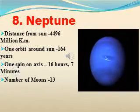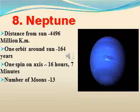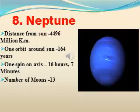Neptune is the last planet in our Solar System. Its distance from the Sun is 4,496 million km. One orbit around the Sun takes 164 years. One spin on axis takes 16 hours and 7 minutes. It has 13 moons.